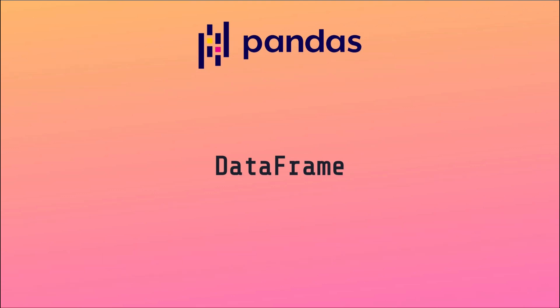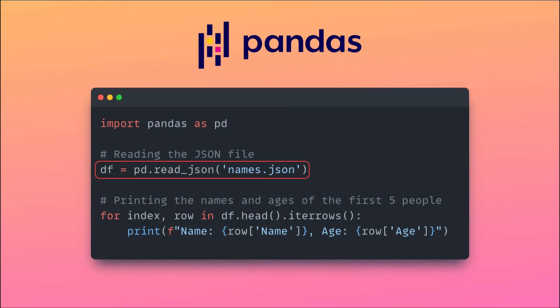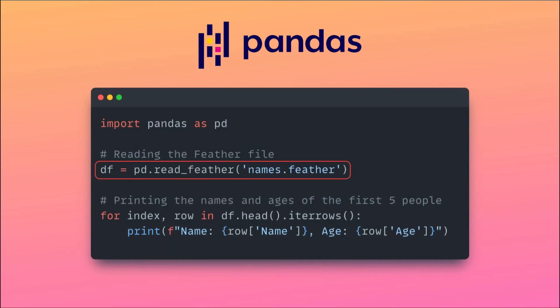Pandas is useful because it supports a wide array of data files — things like CSV, JSON, and Feather. The way in which you read this different data is by just changing the method for accessing that data. Note the change in the read method and the change in the file extension.